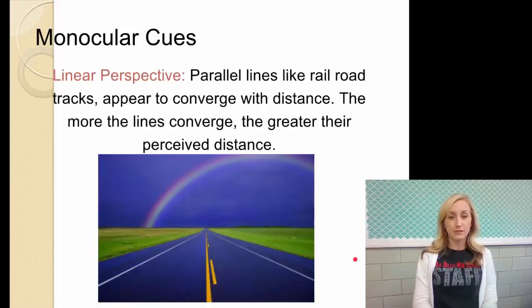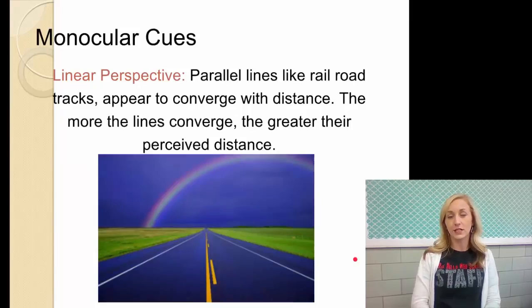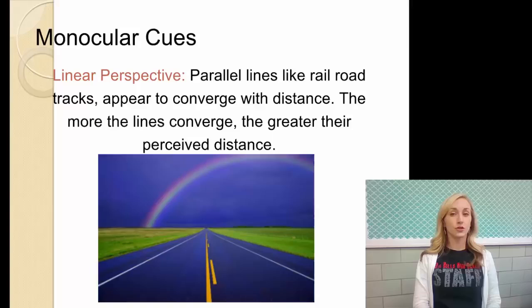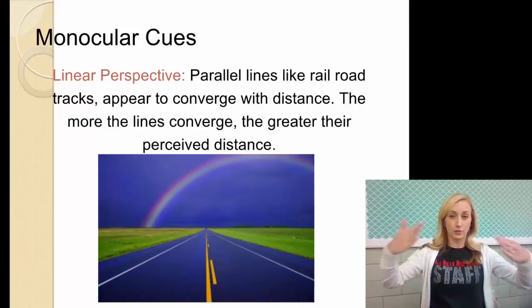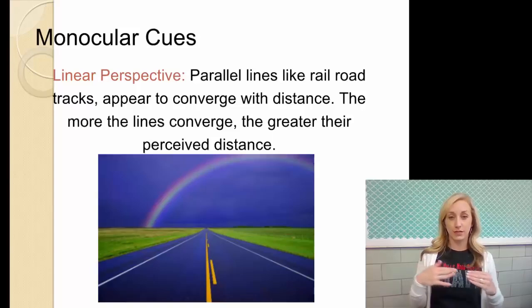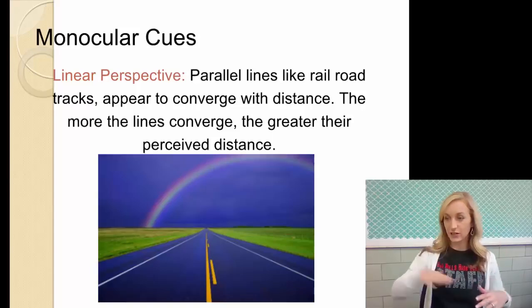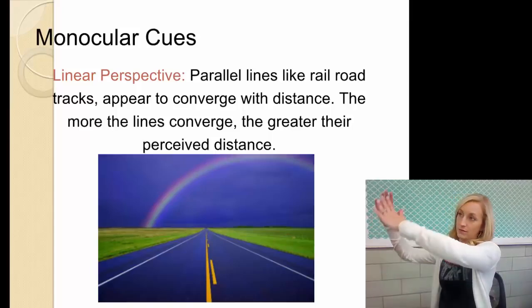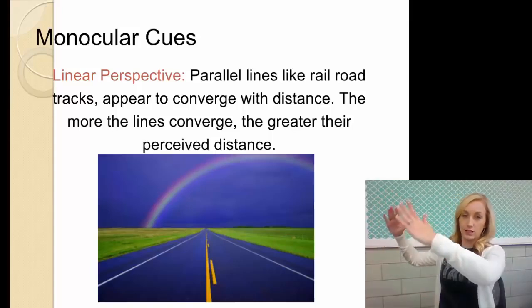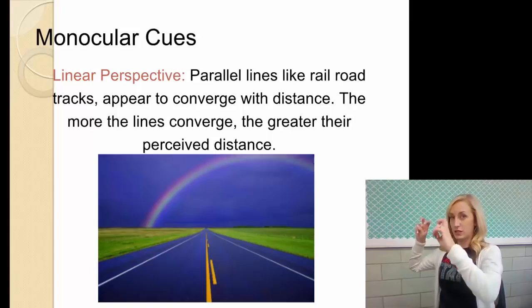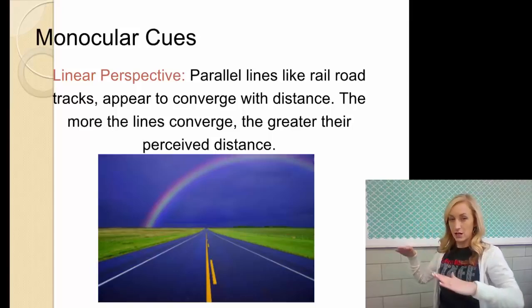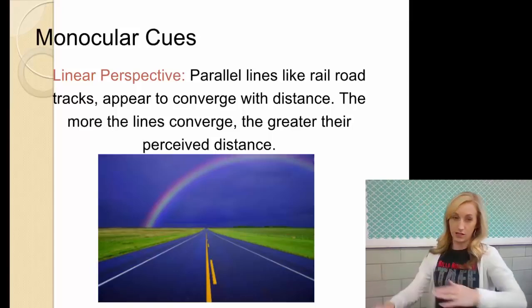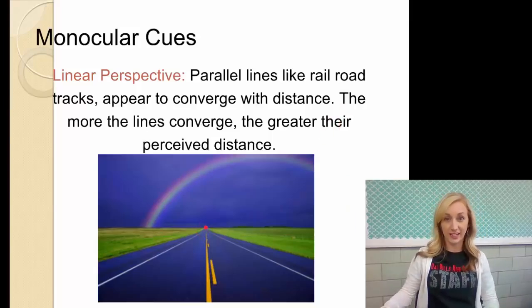Another monocular cue is linear perspective. You've probably learned a lot about this one in art. So parallel lines, like railroad tracks, appear to converge with distance. The more the lines converge or come together, the greater their perceived distance. So like in art, when you have your canvas and you're drawing the two parallel lines, if you don't make them come very close to each other, it doesn't cover as much ground or distance. But if they're really close to each other up at the top, like in this image, like, wow, that's really far away.